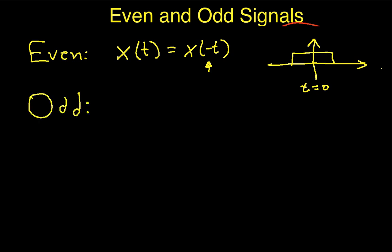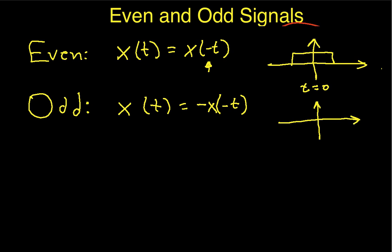Odd is defined as x(t) equal to minus x(−t). So an odd signal is one where if I flip it about the line t equals zero, it's the same as having multiplied it by negative one. An example of an odd signal looks like this — if I flip this about the line t equals zero, I get something that looks like this. If I multiply that by negative one, I get back my original signal. So that's the example of an odd signal.